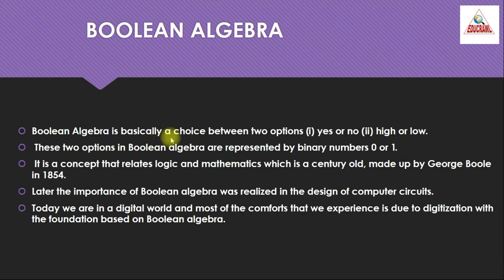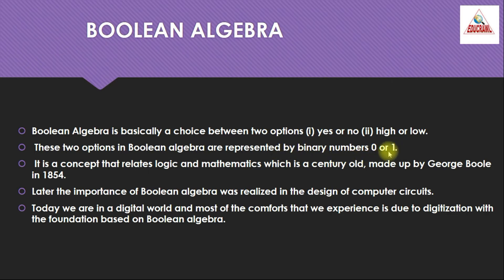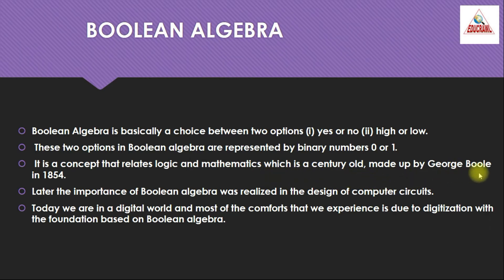Boolean algebra is basically a choice between two options: yes or no, and high or low. These two options in Boolean algebra are represented as binary numbers 0 or 1 — 0 for low and 1 for high. It is a concept that relates logic and mathematics, which is a century old, made by the scientist George Boole in 1854.